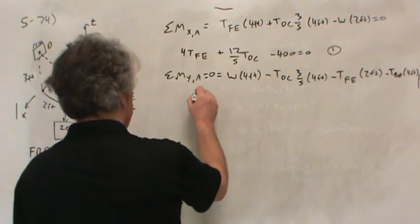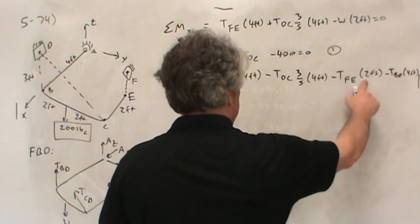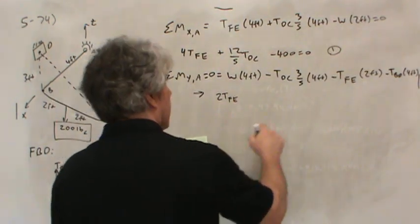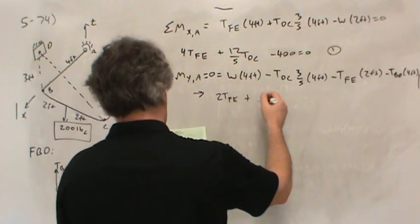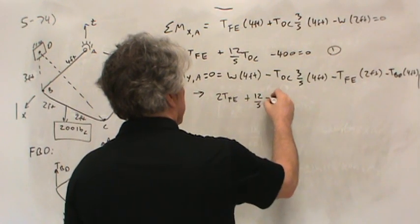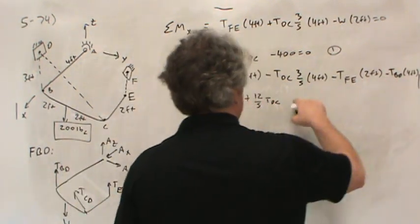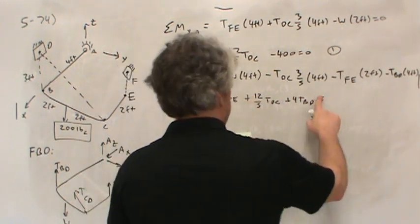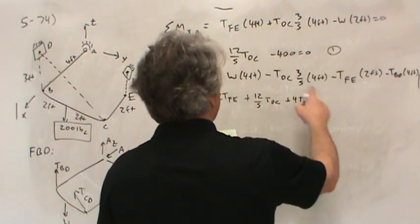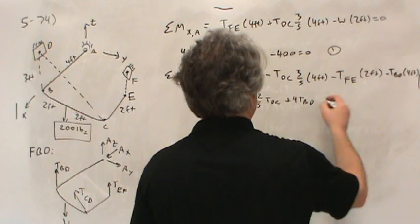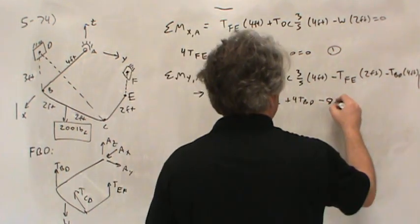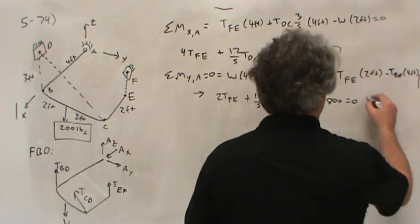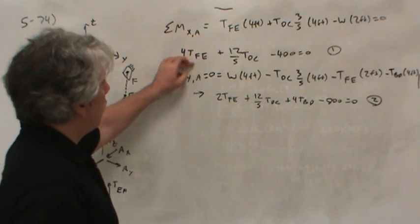So if we simplify this just a bit, let me put this term first on the other side, so 2TFE. Take this one next to the other side, plus three fours are 12, so 12 fifths TDC. And then take this term to the other side, so plus 4TBD equals, well, I guess I'll leave this on this side. Well, I'm moving everything to the other side, right? So let's take this to the other side as well. So it'll be minus four times 200 is 800, equals zero. I'll call this equation two, but notice I still don't have enough to start solving because I've got one, two, three unknowns and only two equations.